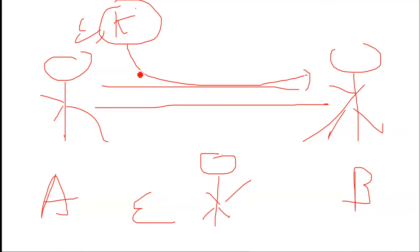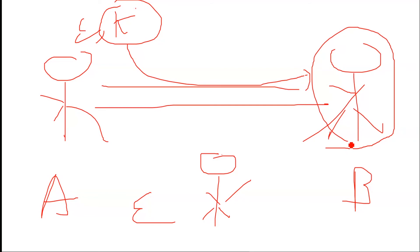Now, if Alice can send this key securely to Bob without any interception, why can't she just send the message itself securely instead? This is the fundamental problem of key distribution.